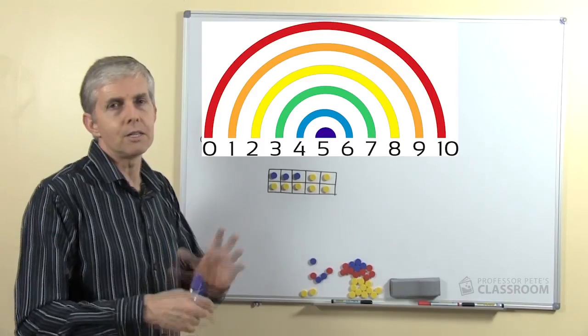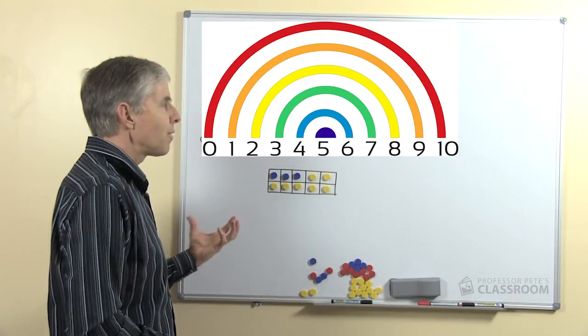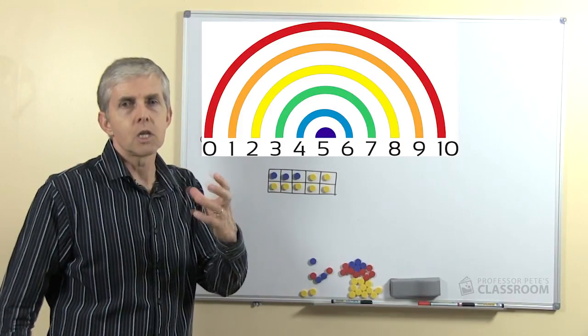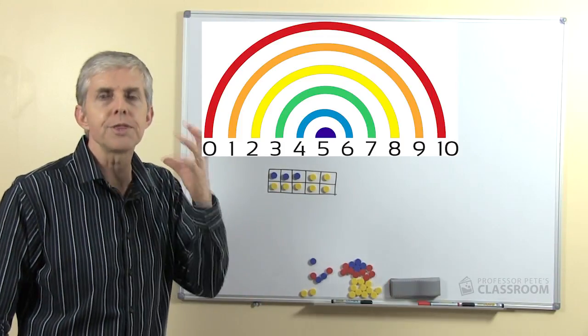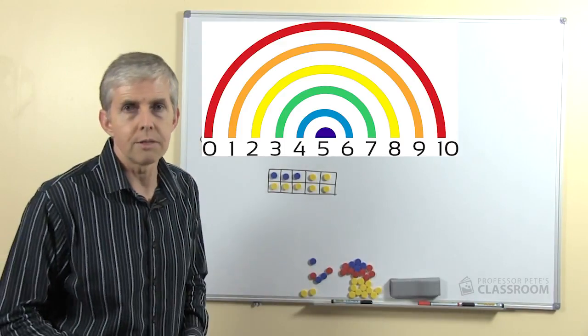Now I should point out again, a bit like the doubles facts that I looked at recently, the rainbow facts don't actually have a cognitive strategy. There isn't a way of thinking about these and going okay if I do this and manipulate that I'll work out the rainbow fact.